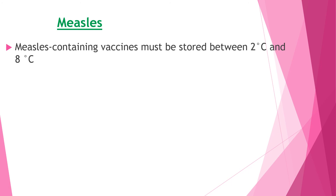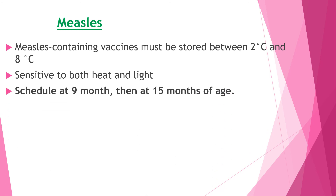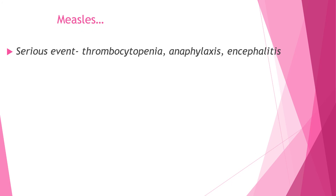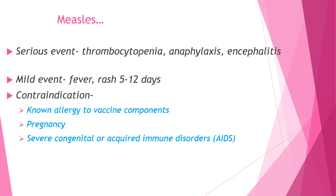Measles-containing vaccine must be stored between two to eight degrees Celsius and is sensitive to both heat and light. The schedule is at 9 months, and currently there is also another schedule at 15 months, so there are two doses of measles vaccine in the EPI schedule. The dose is 0.5 ml subcutaneous on the left upper arm. Mild events can occur after 5 to 12 days with appearance of rash and fever. Contraindications include allergy to vaccine components, pregnancy, and severe congenital or acquired immune disorder, since it is a live attenuated vaccine.